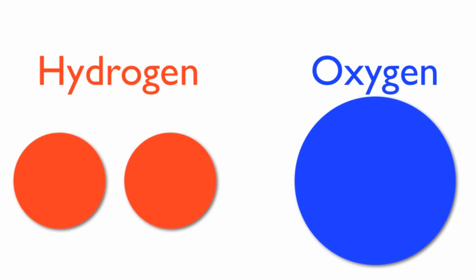The first raw material, made of hydrogen and oxygen atoms, is known to us as water.